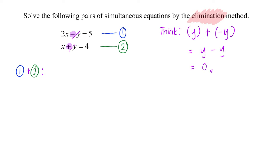So now I will have my 2x plus x. Negative y plus y will be equals to zero. The other side of the equation I will have my 5 plus 4.